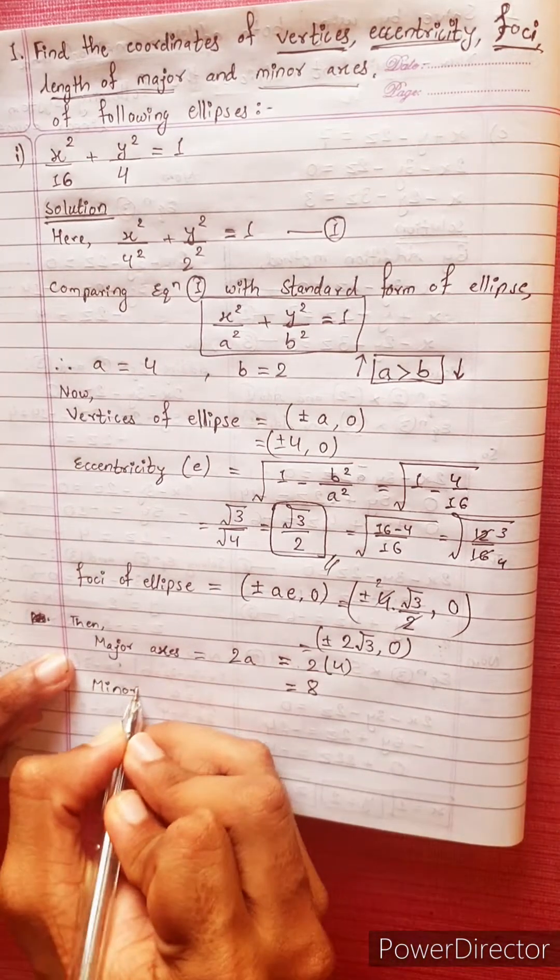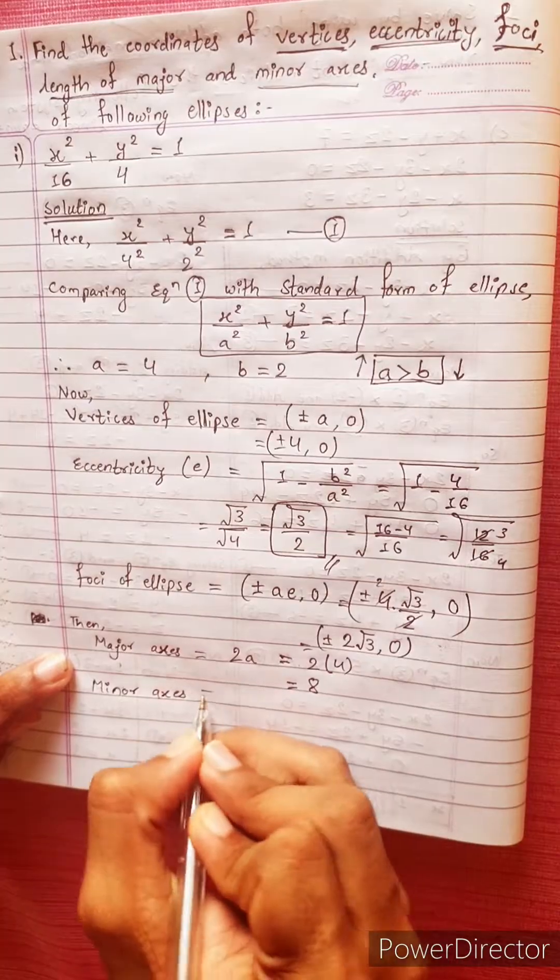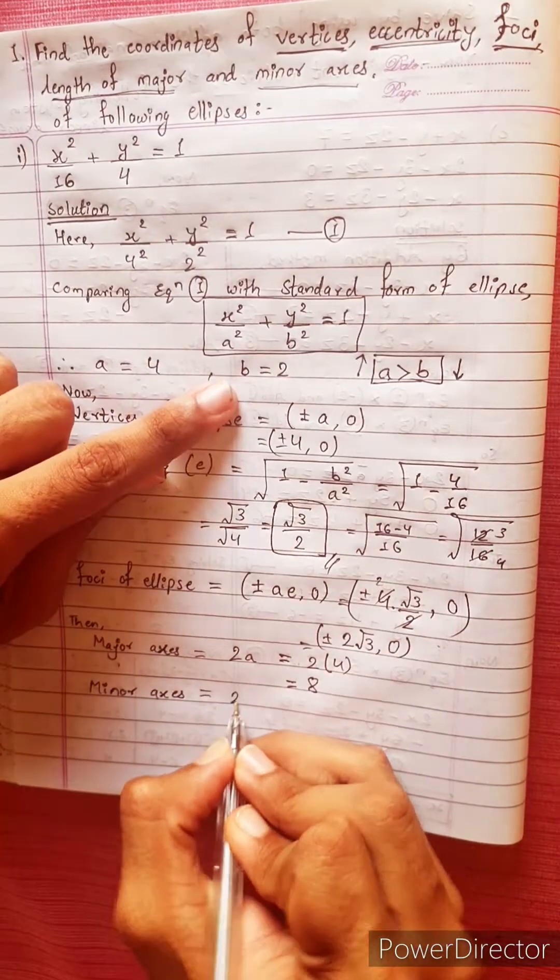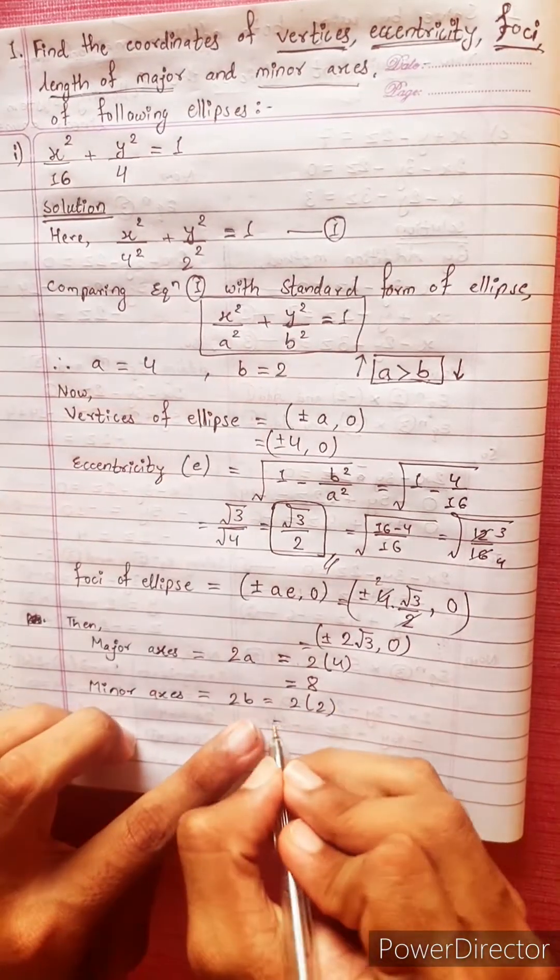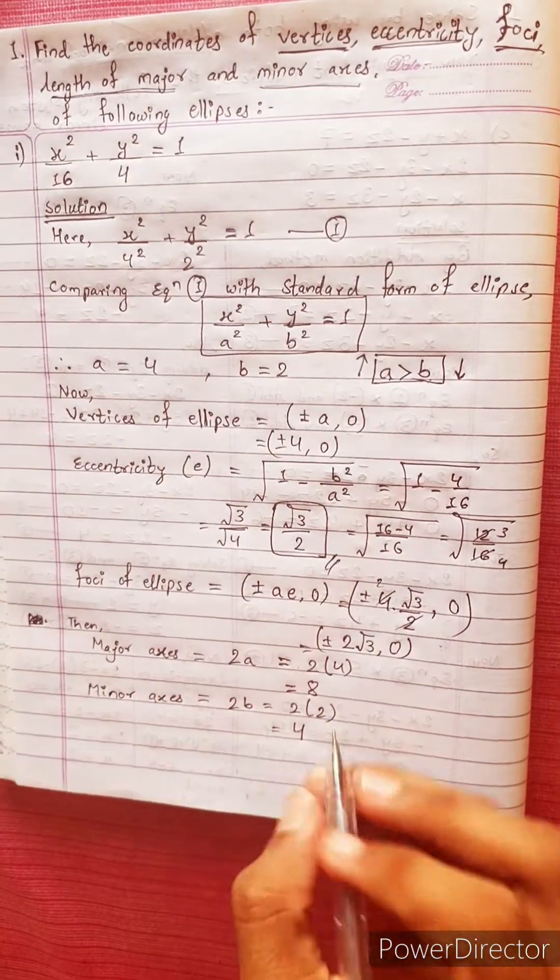Minor axis equals 2b. 2 into b, where b is 2, equals to 4. This is the answer.